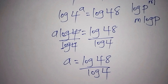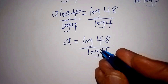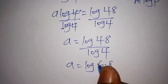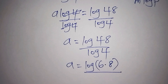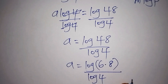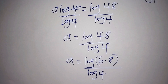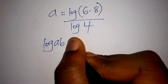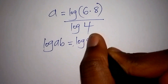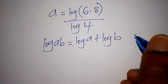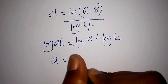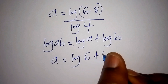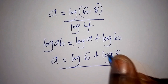We can simplify further by writing log of 48 as log of 6 multiplied by 8, all over log of 4. Using the log product rule — log of a times b equals log of a plus log of b — our a becomes log of 6 plus log of 8, all over log of 4.